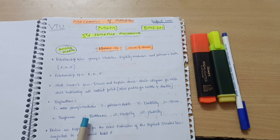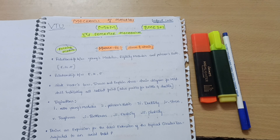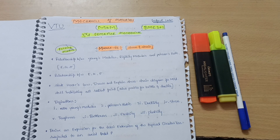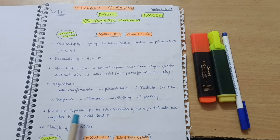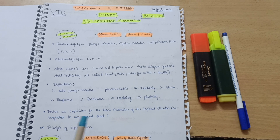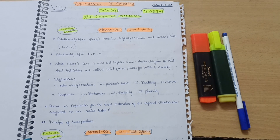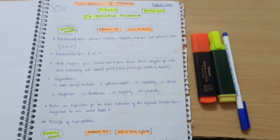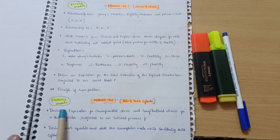Next is the properties of materials: Young's modulus, Poisson's ratio, ductility, stress, toughness, brittleness, elasticity, and plasticity. You need to write at least one line for each property, as there will be a six-mark question on properties of materials. Next is derive an expression for the total extension of a tapered circular bar subjected to an axial load P. Also important is the principle of superposition.